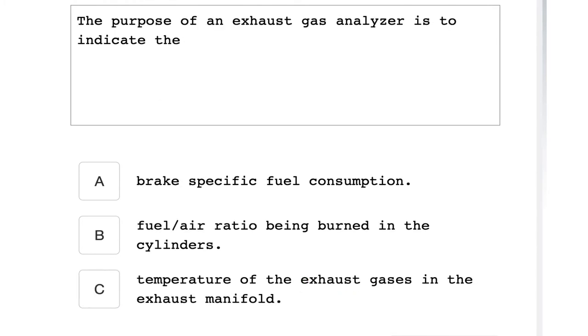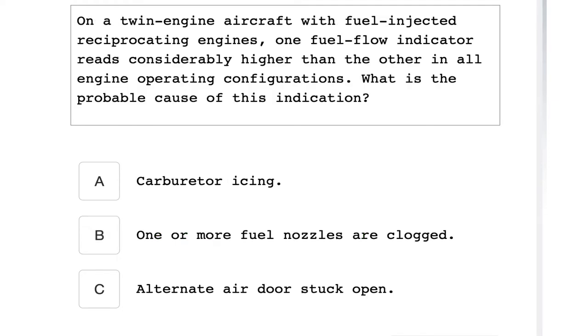The purpose of an exhaust gas analyzer is to indicate the fuel to air ratio being burned in the cylinders. On a twin engine aircraft with fuel injected reciprocating engines, one fuel flow indicator reads considerably higher than the other in all engine operating configurations. What is the probable cause of this indication? One or more fuel nozzles are clogged.